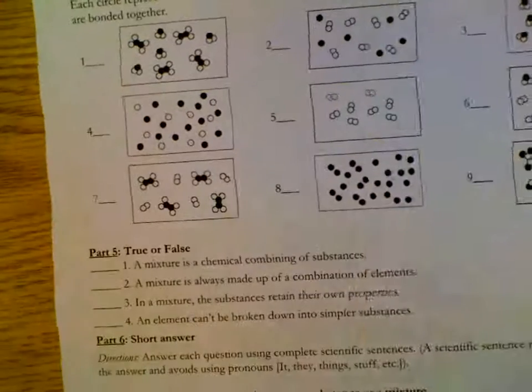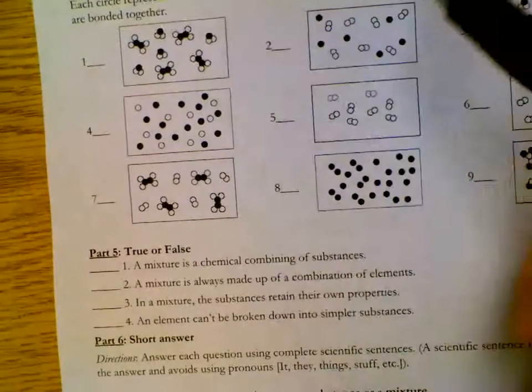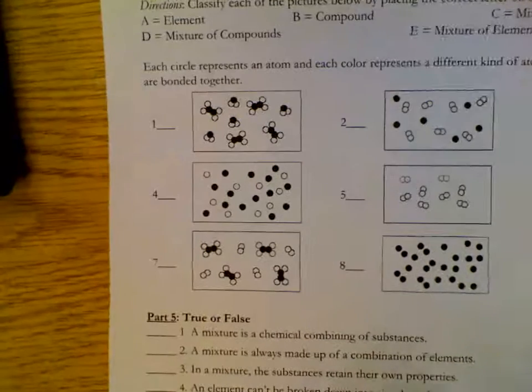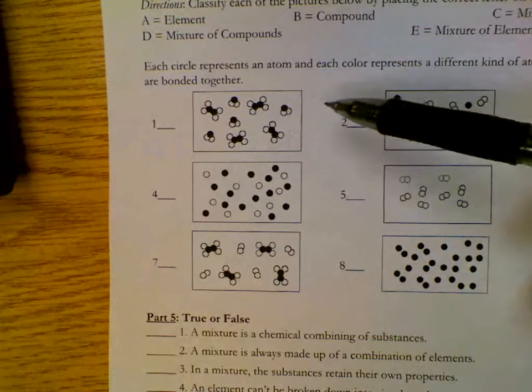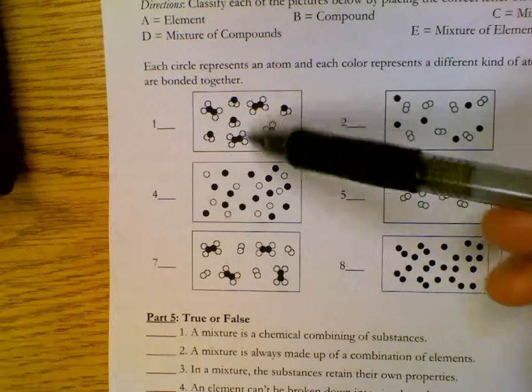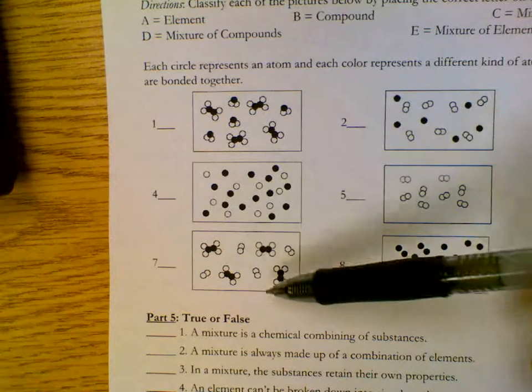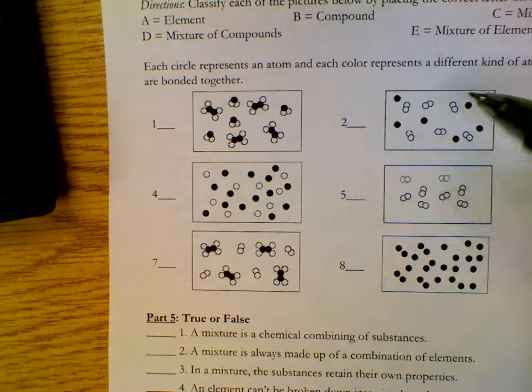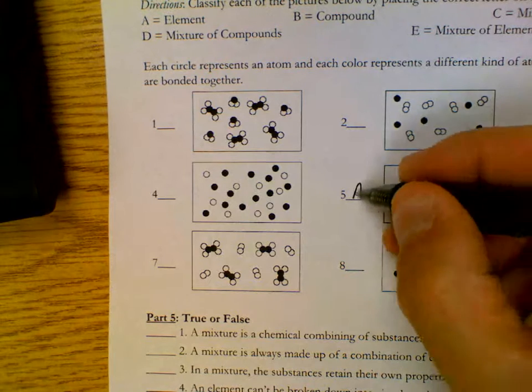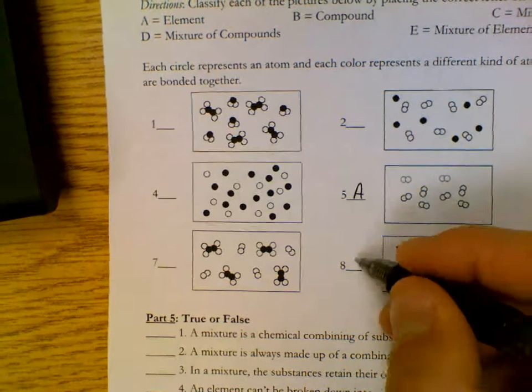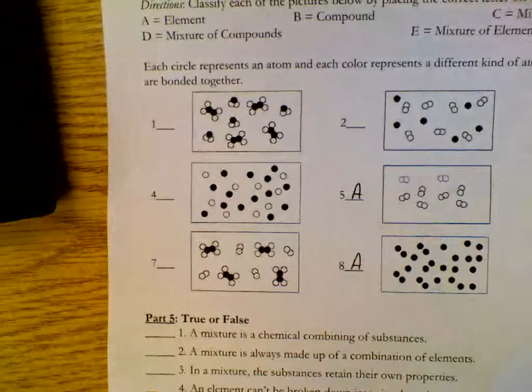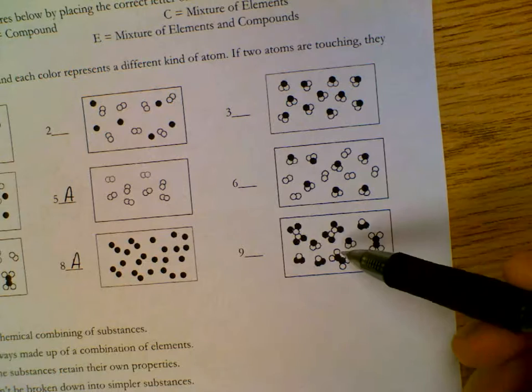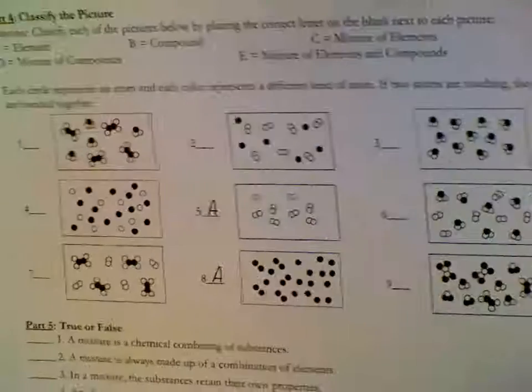You can classify these using these letters up here. Elements should only have one type of circle in the box. So, that's what we're going to look for first. This has multiple types of circles, multiple types, multiple types. This has multiple types. This has the doubles and the singles. This only has doubles. So, this has to be an element. This only has the dark ones. This has to be an element. Multiple types, multiple types, multiple types.